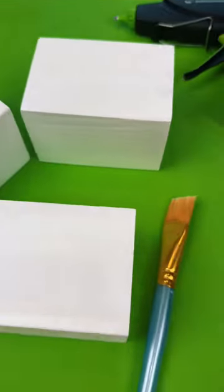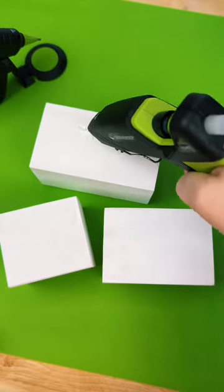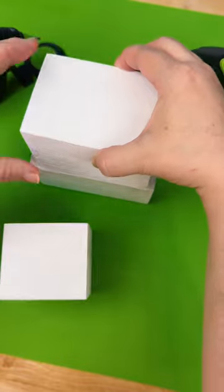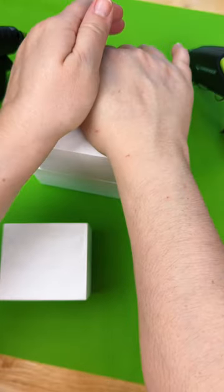First, we're going to take our blocks and we're going to paint them white, and then we're going to stack them up like so and glue them all together to make the body of the snowman.